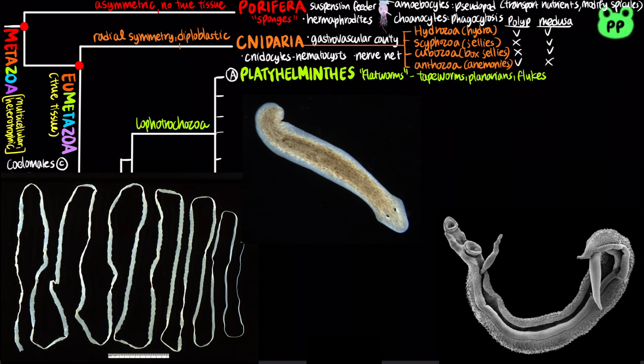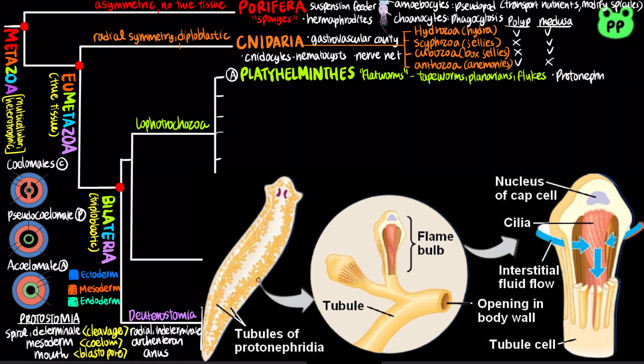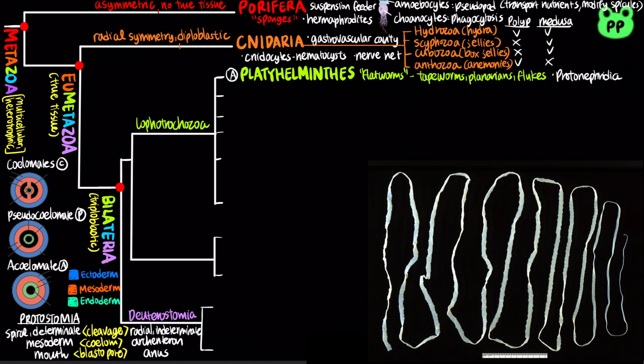Flatworms are acoelomates. They have a flattened body with protonephridia that regulate osmotic balance. Tapeworms are parasites of vertebrates and lack a digestive system; they absorb nutrients from the host intestine.